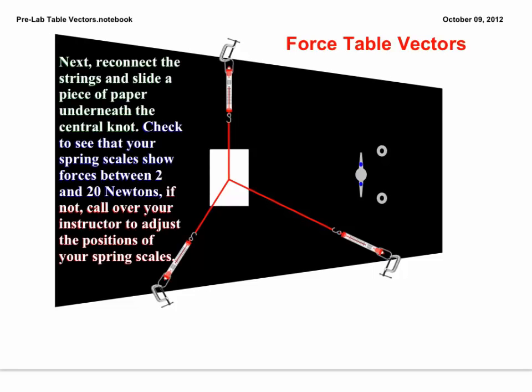You're going to start by first connecting all three strings to the corresponding color spring scale on each side of the table. In other words, there should be a blue, yellow, and green sticker on each end of the rope, and make sure that end of the rope is connected to the corresponding color spring scale.